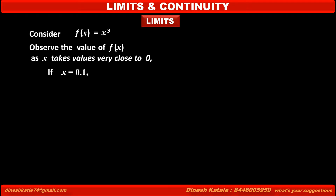Suppose x = 0.1, one nearest value of 0. Substituting this value in f(x), we get f(0.1) = (0.1)³ = 0.001. So the value of f(x) when x = 0.1 is 0.001, which is also a nearest value of 0.